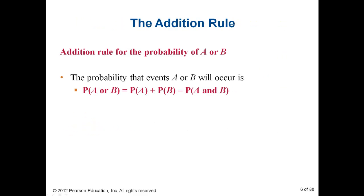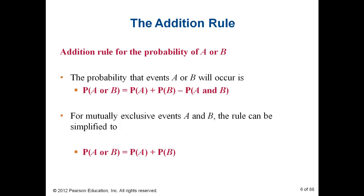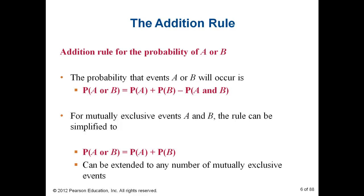Next, we're going to look at the addition rule. I want to know the probability of event A or event B happening, and there are two cases. If the events are not mutually exclusive, we add the probability of A to the probability of B, and subtract the probability of both A and B. If we know they're mutually exclusive, it's just the probability of A plus the probability of B. This rule can be extended to any number of events.